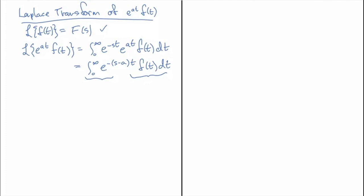and the only thing that's different is this is normally s and we've replaced it by s minus a, which means that we can just write down that the transform of e to the a t f of t is just F of s minus a.